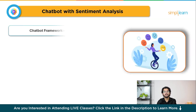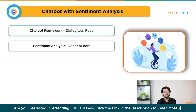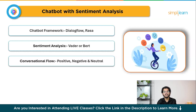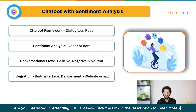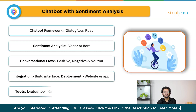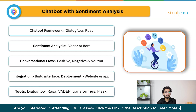To build the chatbot project: Step 1 is chatbot framework — use tools like Dialogflow or Rasa to build a conversational chatbot capable of handling various user intents. Step 2 is sentiment analysis — integrate a sentiment analysis model using pre-trained models like VADER or BERT. Step 3 is conversational flow — adjust the chatbot's responses based on the sentiment (positive, negative, or neutral) detected in the user's input. Step 4 is integration and deployment — build an interface on a website or messaging platform where users can interact with the chatbot in real time and receive sentiment-aware responses. Tools: Dialogflow, Rasa, VADER, Transformers, Flask. Skills gained: sentiment analysis, chatbot deployment, and conversational AI.